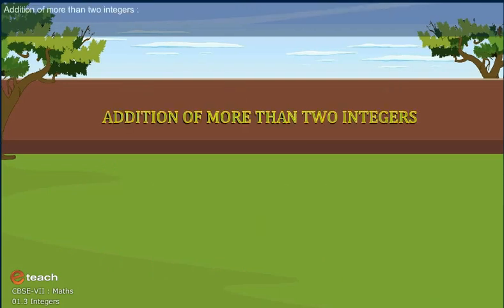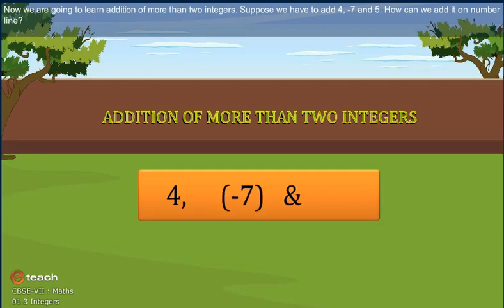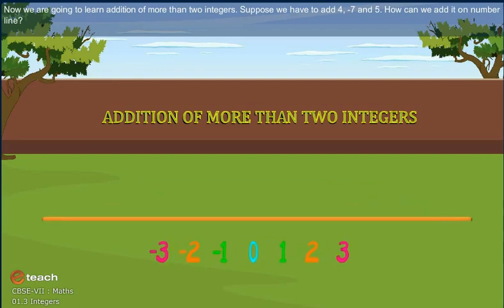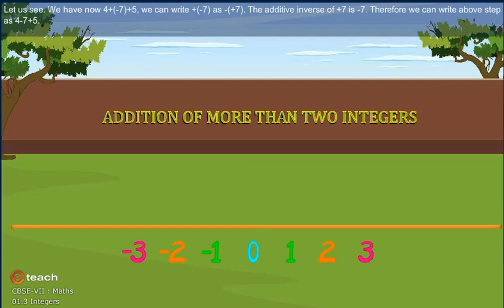Now, we are going to learn addition of more than 2 integers. Suppose we have to add 4, minus 7 and 5. How can we add it on a number line? Let us see.